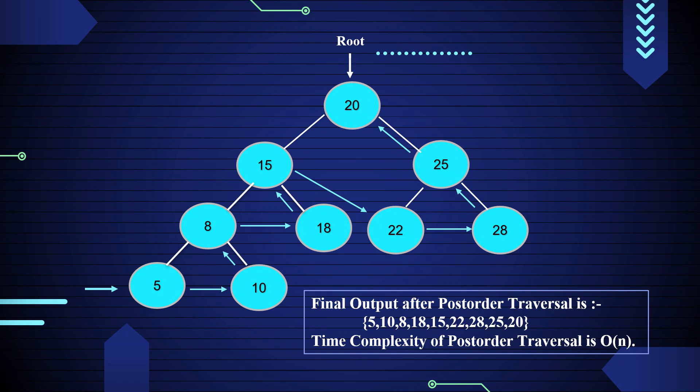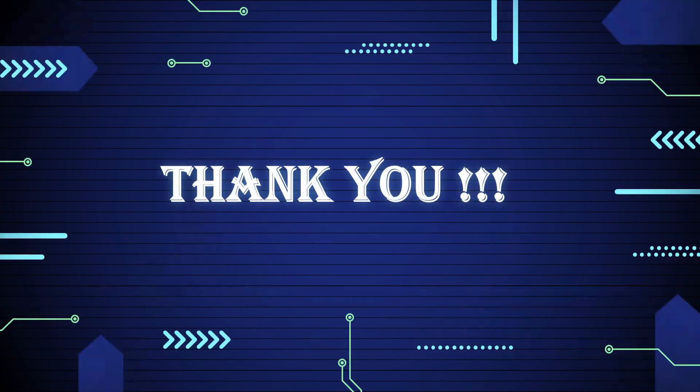The final output after post-order traversal is 5, 10, 8, 18, 15, 22, 28, 25, 20. The time complexity of post-order traversal is O(n), where n is the size of the binary tree. Thank you everyone.